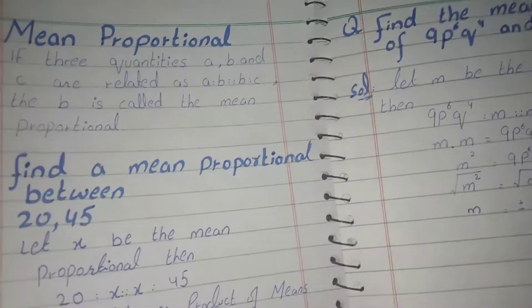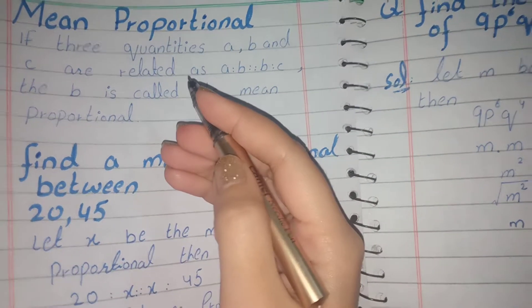let's see what is mean proportional. If there are three quantities A, B, and C, they are related as A, B, B and B. What is mean proportional? If we solve two quantities, let us know what is mean proportional.